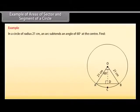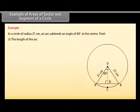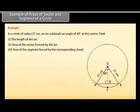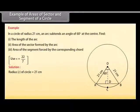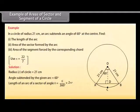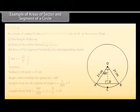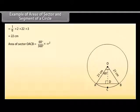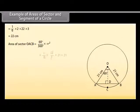Example: In a circle of radius 21 cm, an arc subtends an angle of 60° at the center. Find: (1) the length of the arc, (2) area of the sector formed by the arc, (3) area of the segment formed by the corresponding chord. Use π = 22/7. Radius R = 21 cm, angle = 60°. Length of arc ACB = (θ/360°) × 2πR = 22 cm.